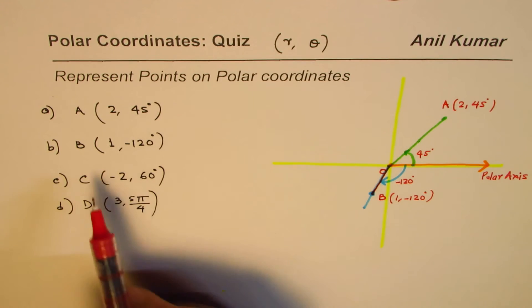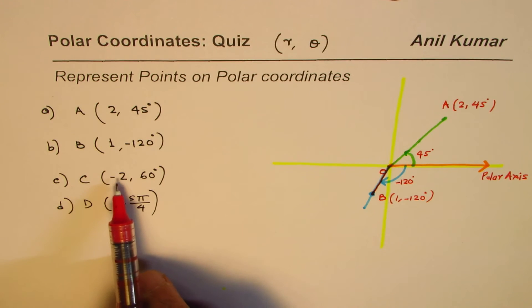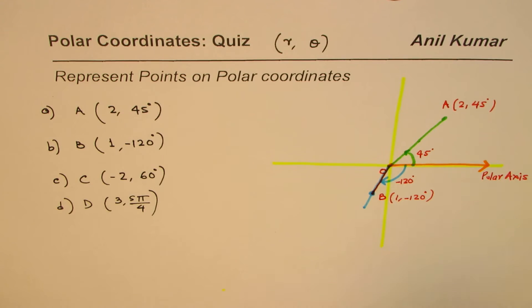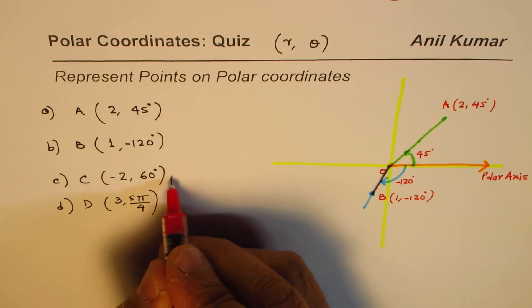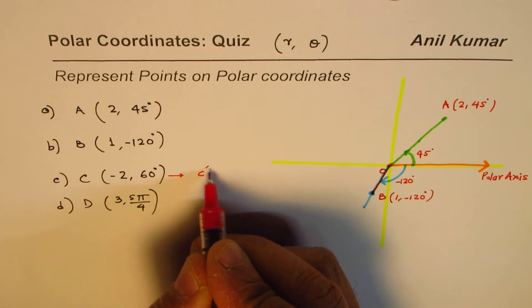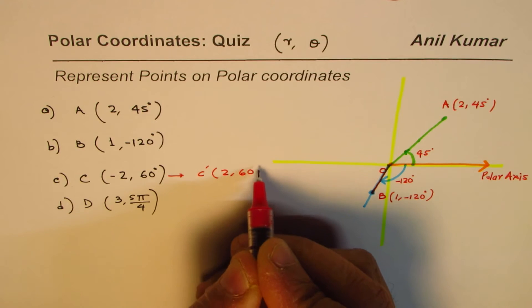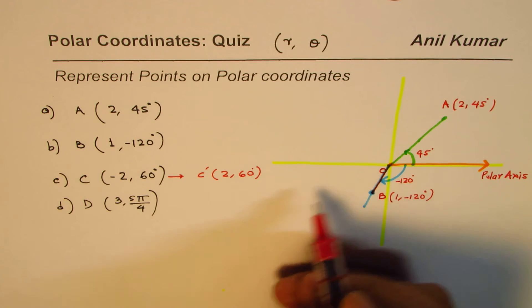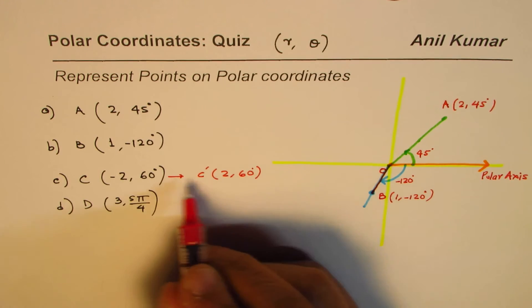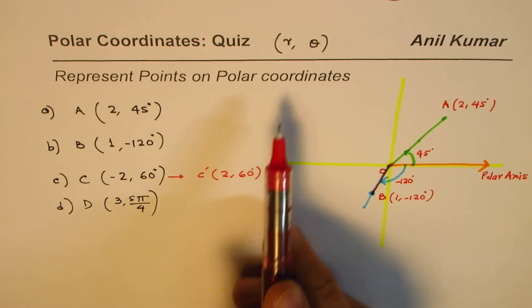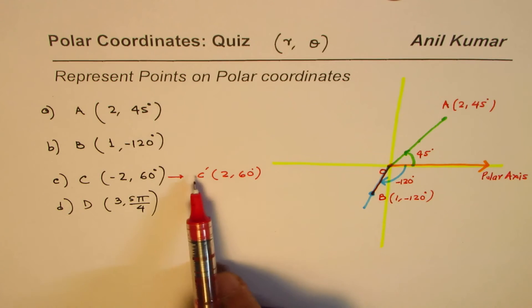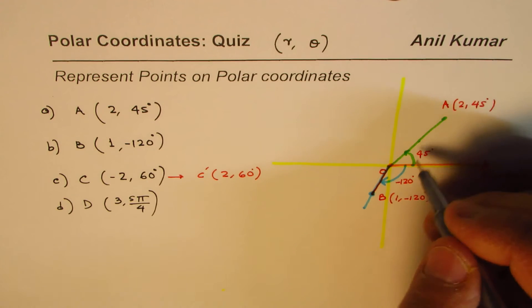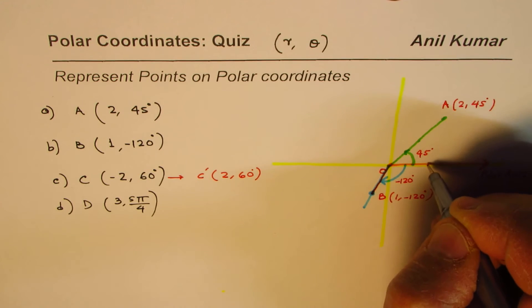C is (-2, 60°). Now how do we do this one? First we will actually sketch the image. So first we need to sketch C', which is (2, 60°), and then we'll reflect it on the pole, or we'll extend or rotate by 180 degrees. r is 2, angle we'll make first image of this point, 60 degrees.